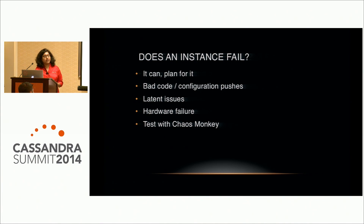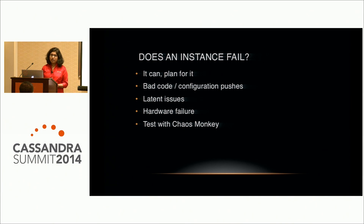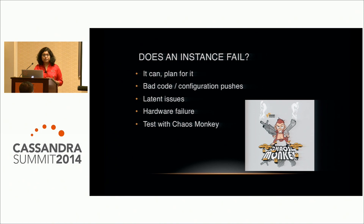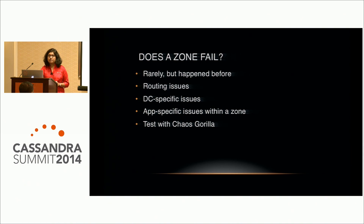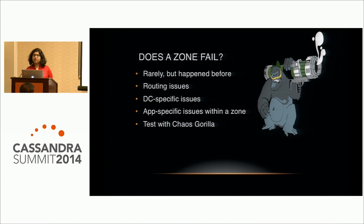There are many ways things can fail, even in the cloud or in a data center. Instances can fail due to bad hardware, latent issues, or a bad push — we test that through Chaos Monkey. Zone failures (a zone in Amazon is a data center) are rare but do happen, related to routing issues, DC-specific issues, or application-specific issues within a zone — we test those with Chaos Gorilla.